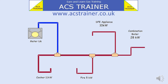We now need to count the sections to the other appliances. Starting back at the meter to the tee equals one section. From the first tee to the second tee equals two sections. From the second tee to the fire equals three sections. These are highlighted in blue.